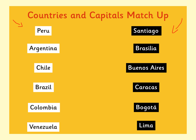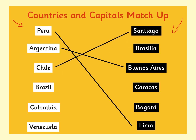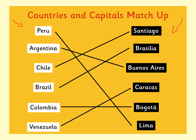Great job, everyone — now let's go to the answers. So Peru: the capital city of Peru is Lima. Capital city of Argentina is Buenos Aires. Capital city of Chile is Santiago. Of Brazil is Brasilia. Of Colombia is Bogota. And Venezuela is Caracas. Well done if you were able to read that map and get these correct.